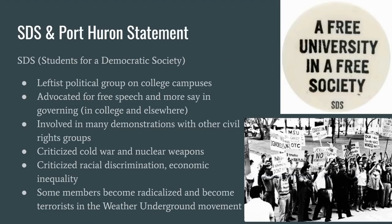The Students for a Democratic Society, or SDS, was a leftist political group active on college campuses in the 1960s. They advocated for free speech, more say in governing, and involved themselves in civil rights, women's rights, and anti-war demonstrations. Overall, they criticized the Cold War, nuclear weapons, racial discrimination, and economic inequality. Later in the late 1960s and early 1970s, some SDS members became radicalized and orchestrated a series of bombings across the United States.